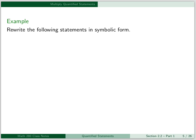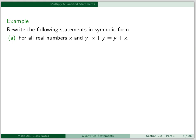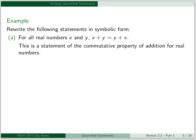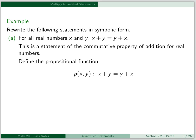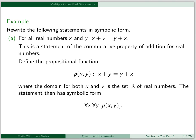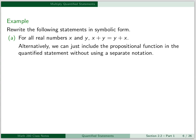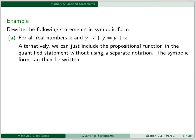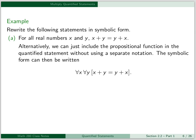For our first example, we want to rewrite the following statements in symbolic form. Our first statement is: for all real numbers x and y, x plus y equals y plus x. This probably looks familiar — this is a statement of the commutative property of addition for real numbers. Start by defining the propositional function p of x, y to be x plus y equals y plus x, where the domain for both x and y is the set R of real numbers. The statement then has symbolic form: for all x, for all y, p of x, y. Alternatively, we can write: for all x, for all y, x plus y equals y plus x.